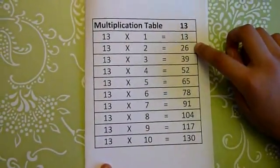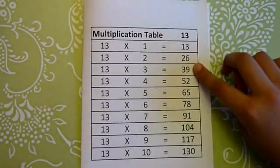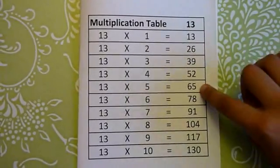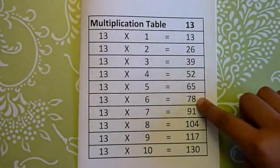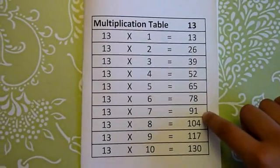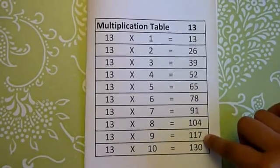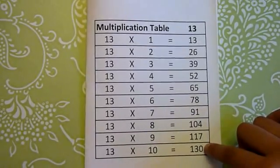13 1s are 13, 13 2s are 26, 13 3s are 39, 13 4s are 52, 13 5s are 65, 13 6s are 78, 13 7s are 91, 13 8s are 104, 13 9s are 117, 13 10s are 130.